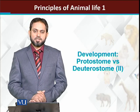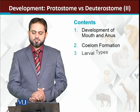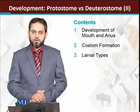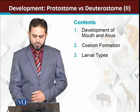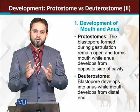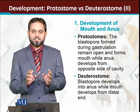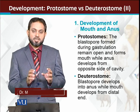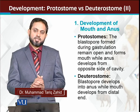Development: protostomes versus deuterostomes. The contents include development of mouth and anus, coelom formation, and the larval types in protostomes and deuterostomes. A comparative study tells us that the developmental differences between protostomes and deuterostomes include the formation of mouth and anus.